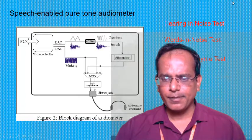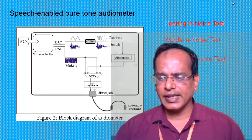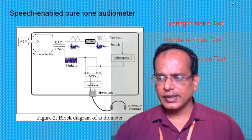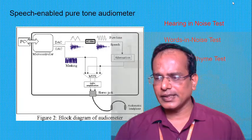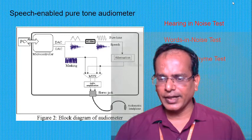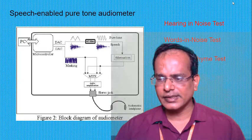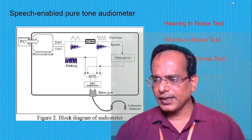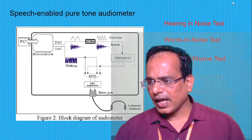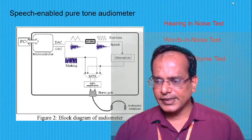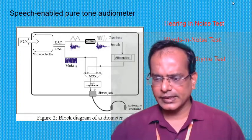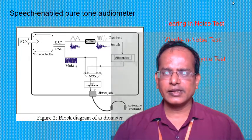The Pure Tone Average (PTA) is the average of hearing sensitivity at 500, 1000, and 2000 Hz. This average should be approximately equal to the Speech Reception Threshold (SRT) within 5 dB, and the Speech Detection Threshold (SDT) within 6 to 8 dB. If the SRT is significantly better than the PTA, pseudo-hypoacusis should be considered. If the PTA is significantly better than the SRT, central involvement should be considered.